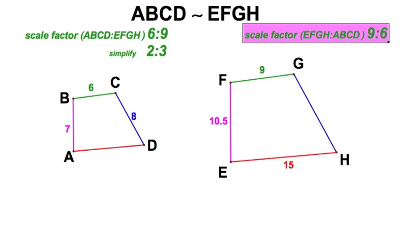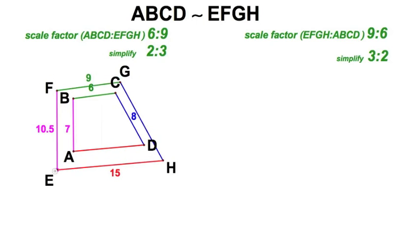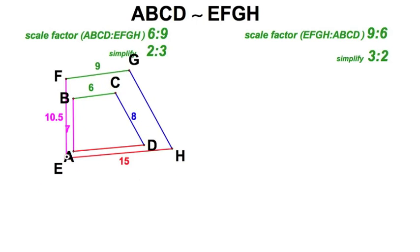On the other hand, I could say that the large figure is to the smaller figure as nine is to six, or a scale factor of three to two. That's saying that this figure - every one of its sides is simply one and a half times as big as its corresponding side on ABCD.